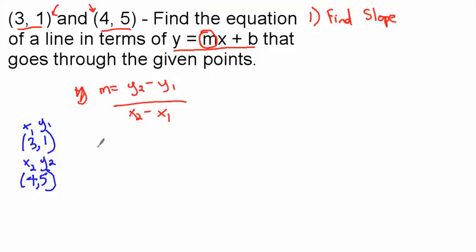And so m is going to equal y2, which is 5, minus y1, which is 1, over x2, which is 4, subtracted from x1, which is 3. So m, 5 minus 1 is 4, and 4 minus 3 is 1. And so 4 over 1 is a fraction, but 4 over 1 is really just 4. And so we know that the m equals 4.